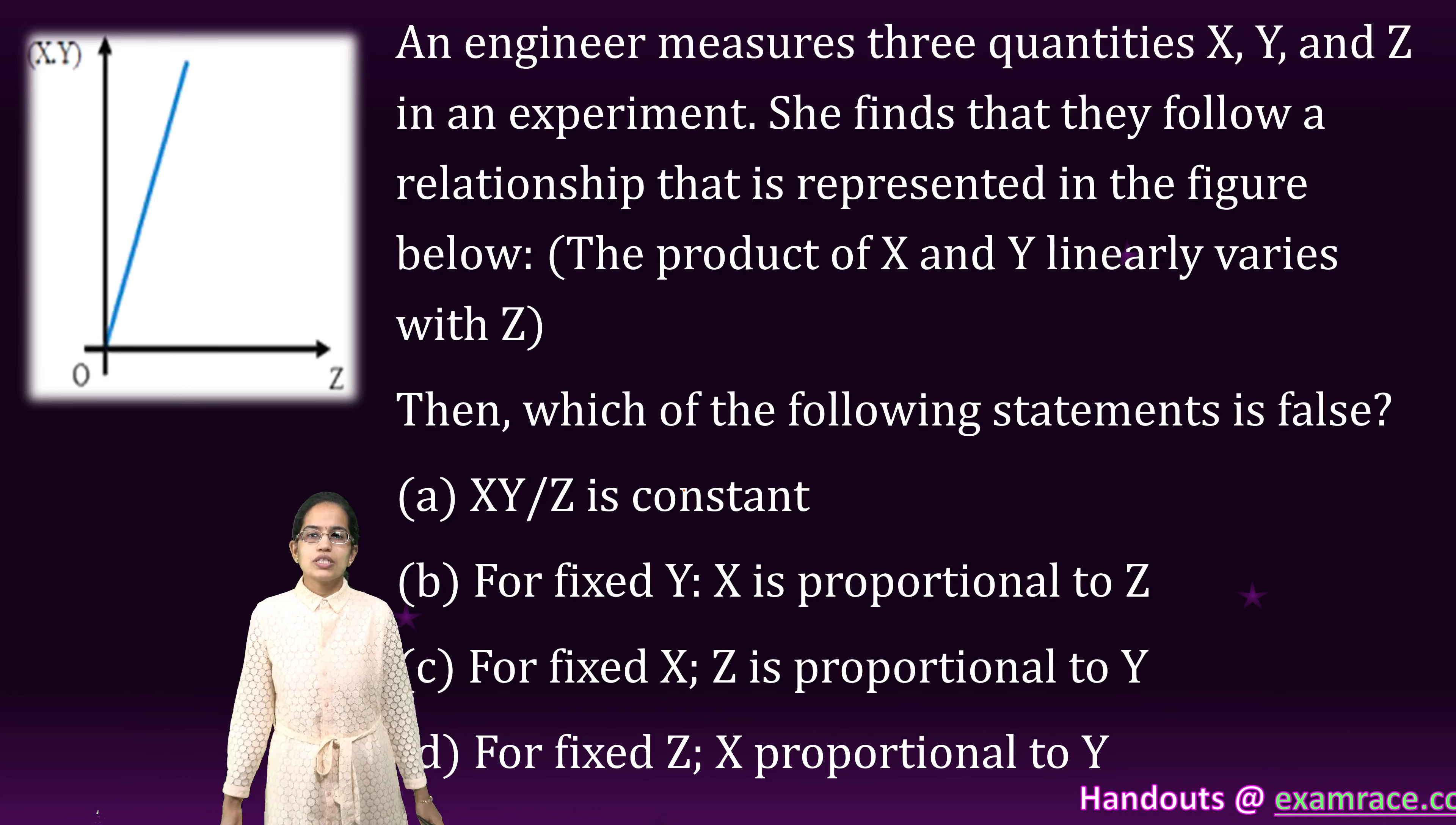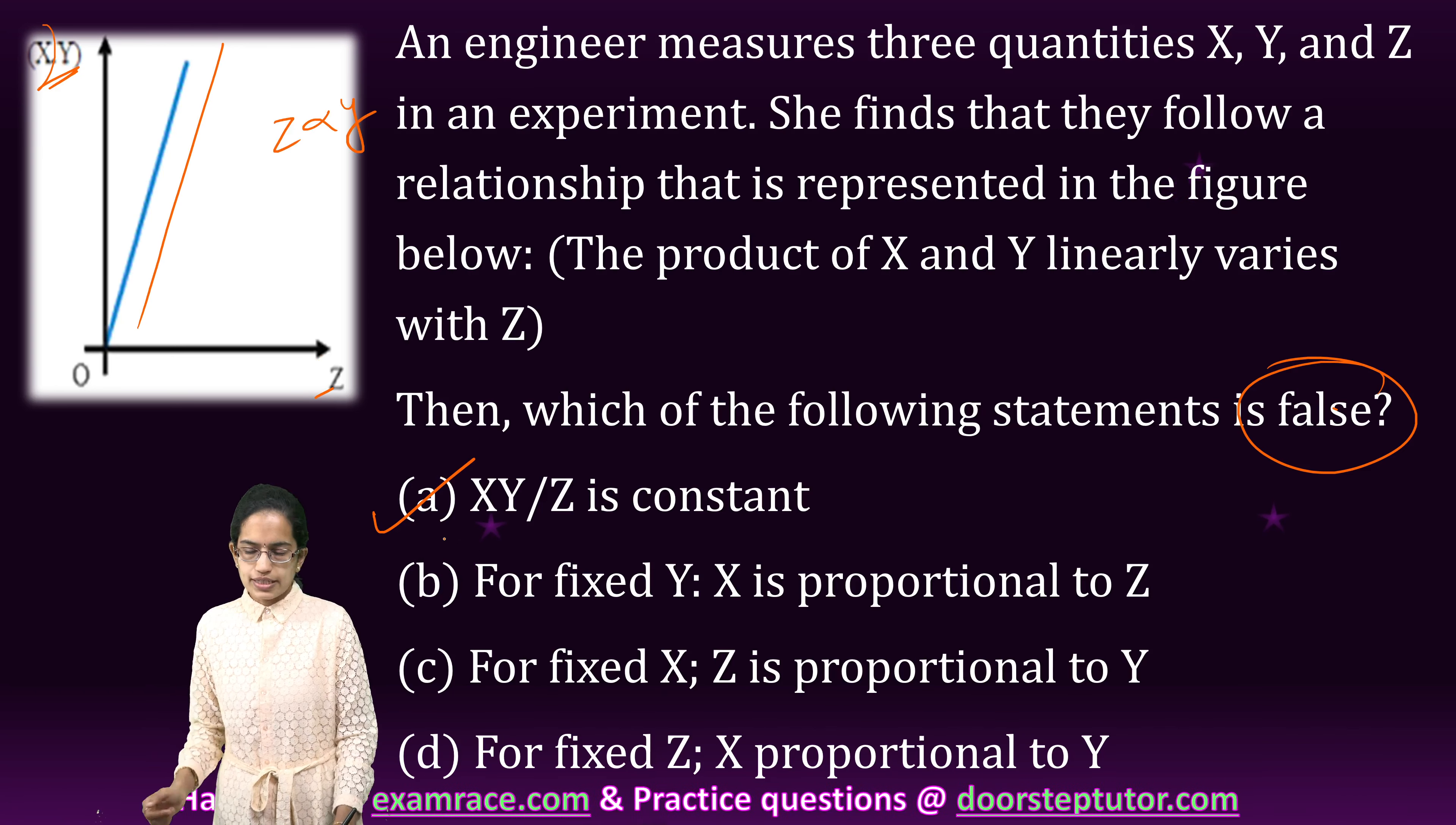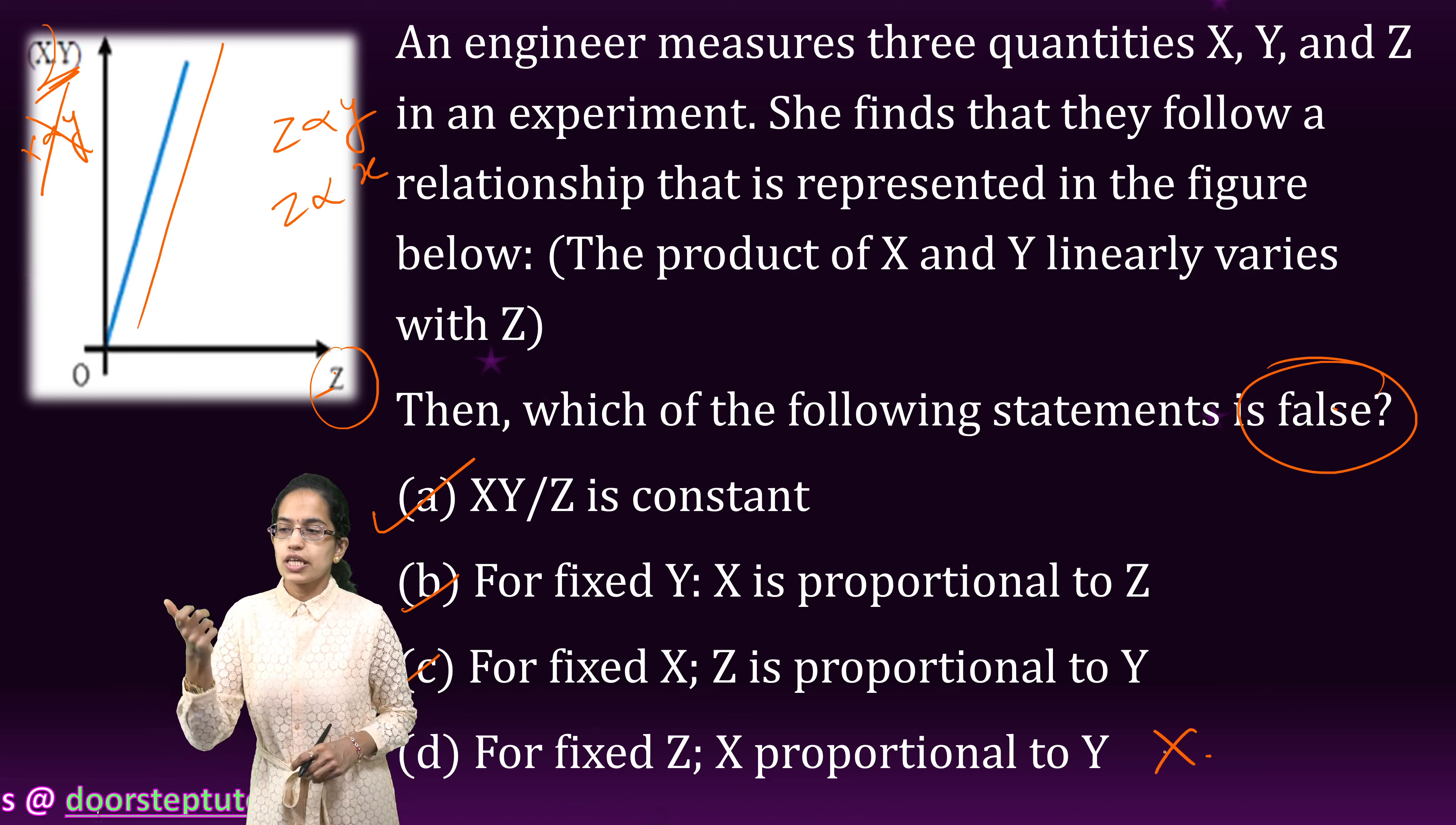The next is: an engineer measures 3 quantities x, y and z in an experiment. She found that there is a relationship such that x and y have a relationship with z. Now which of this statement is false? The relation between x, y and z is a constant relationship, that is correct because it's a linear line that is there. So it's a constant relationship, that is correct. If I keep my x fixed, I would say z is proportional to y. That is correct. If I keep my y fixed, I can say z is proportional to x. That is again correct. But if I keep my z fixed, I cannot say that x is proportional to y. That would be false because it could be in any ratio. It could be squared, it could be a fraction. I cannot predict about that. So the only incorrect choice here would be d. That is for a fixed value of z, I cannot say x and y are proportional.